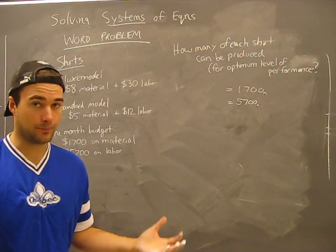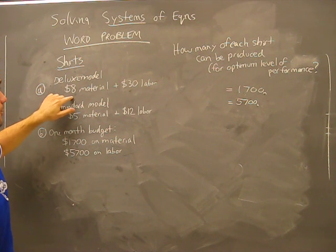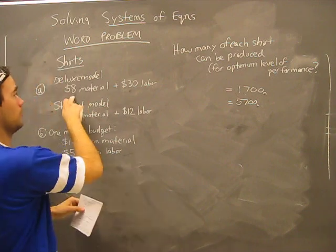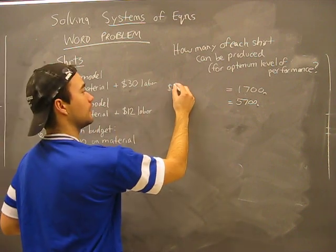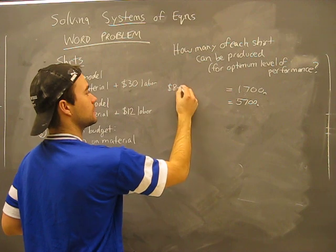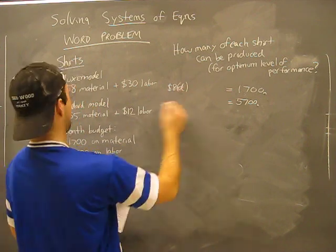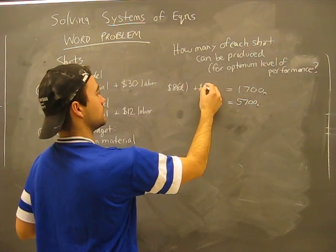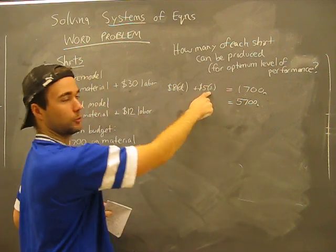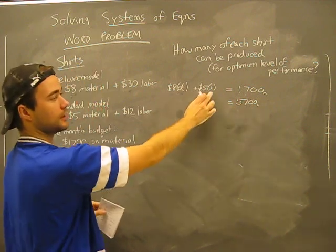We're looking for how many shirts of each type will give us the best bang for our buck as producers. So we know that deluxe models, $8 for material, standard models, $5 for material. We don't know how many of each we're going to do, but we know that it's $8 per crack, so we can say it's $8 for the deluxe, so that's 8x, and standard, $5 standard. Okay, something like 8x plus 5y. I'll put DNS so I don't forget that.